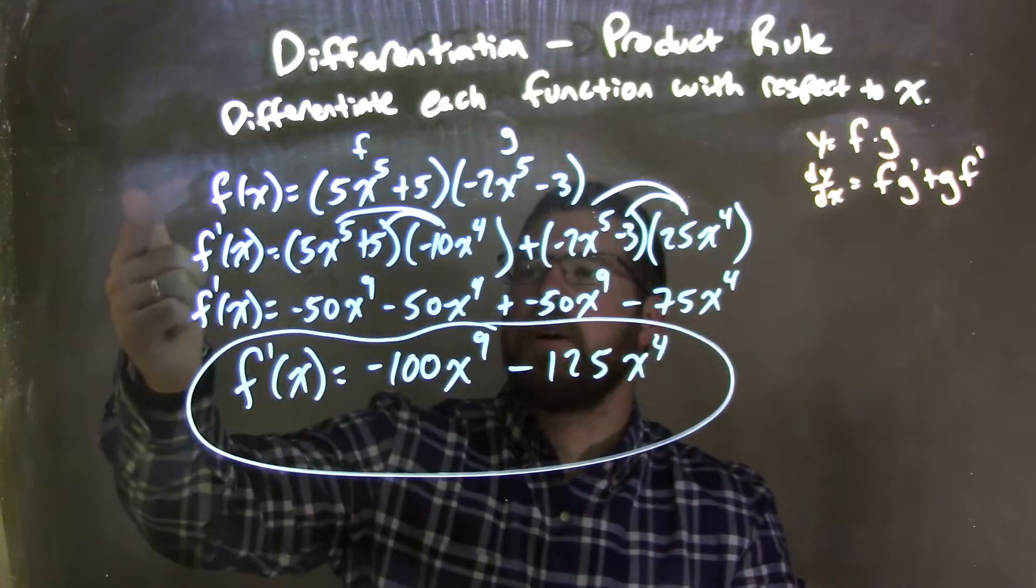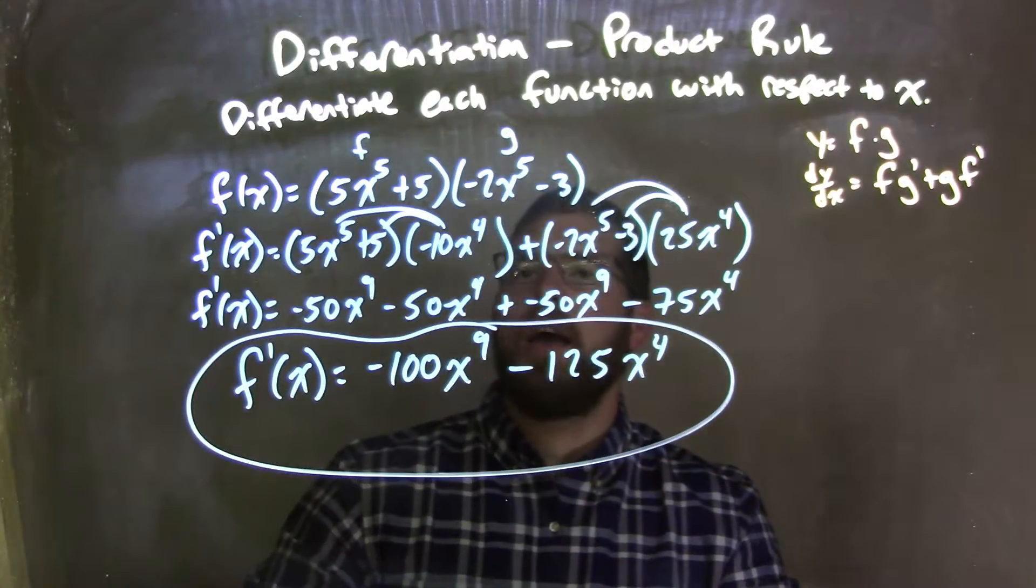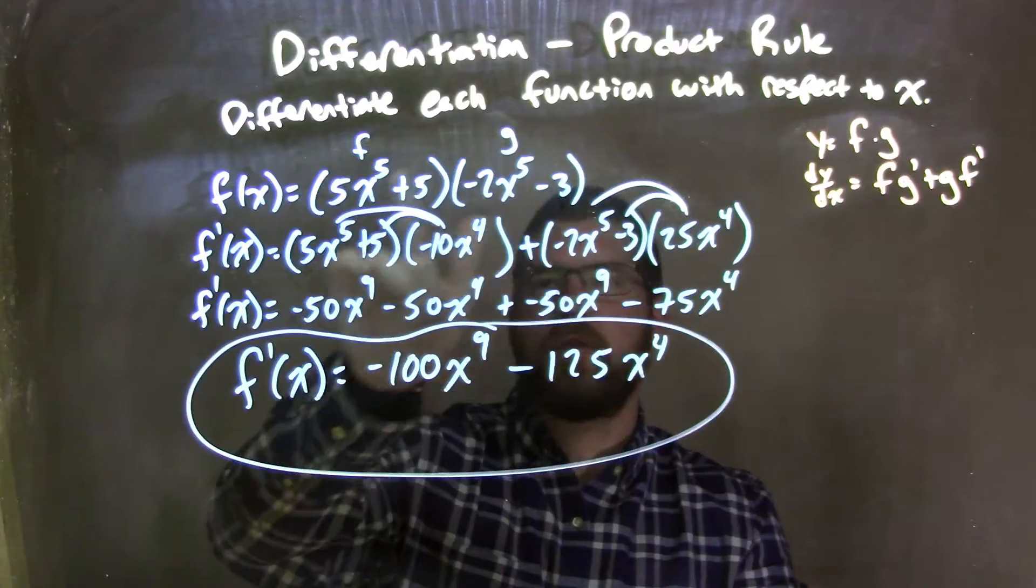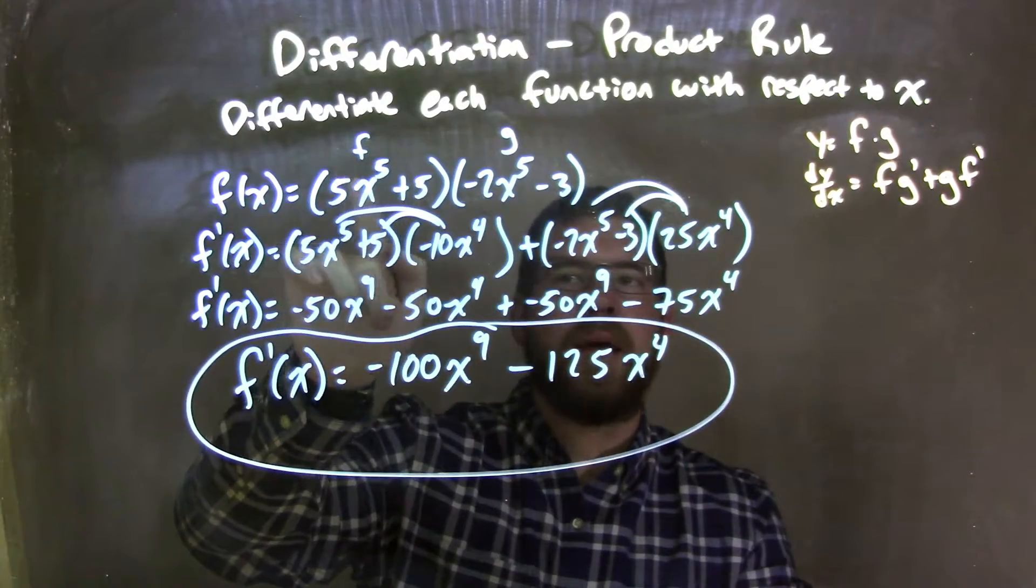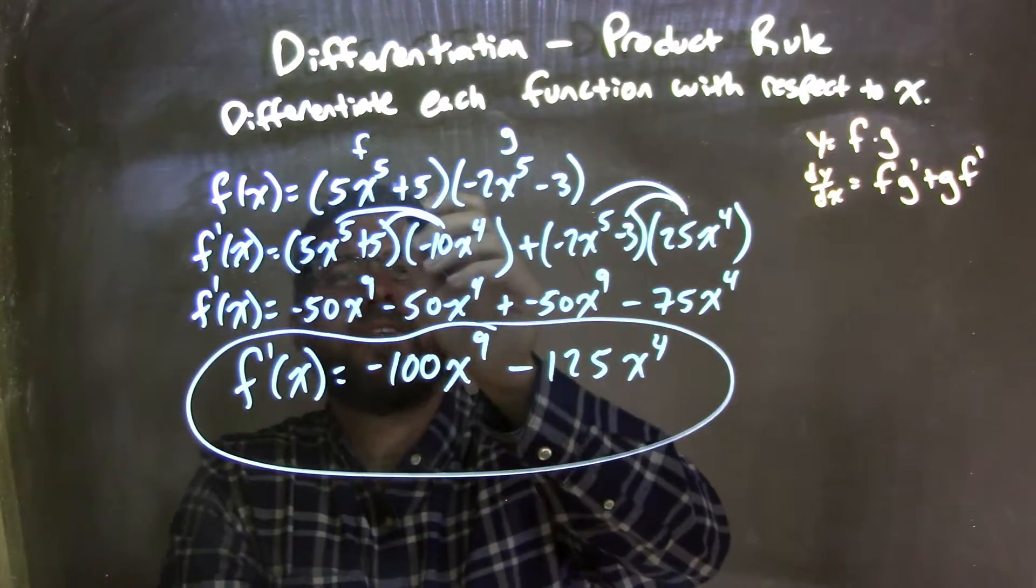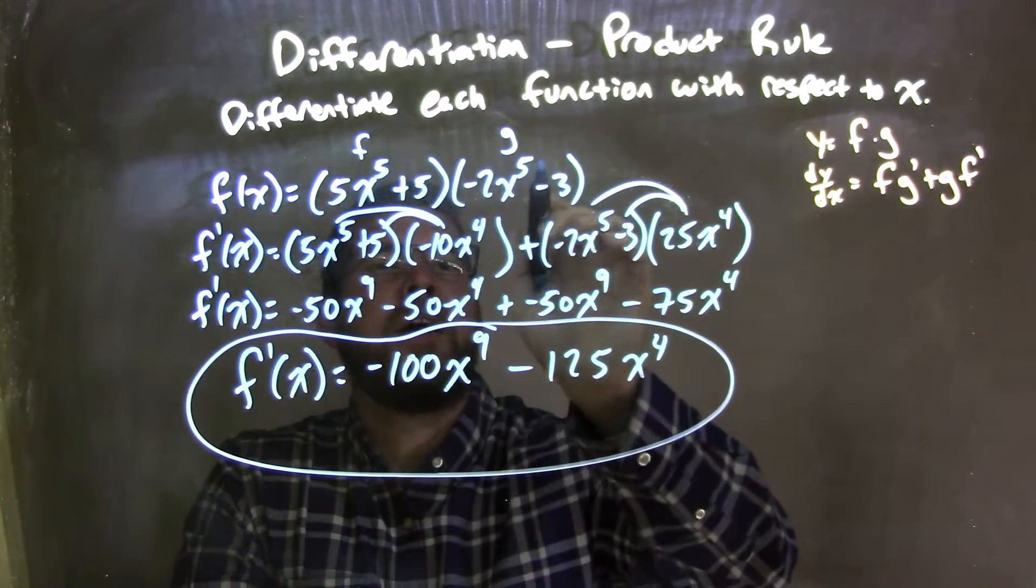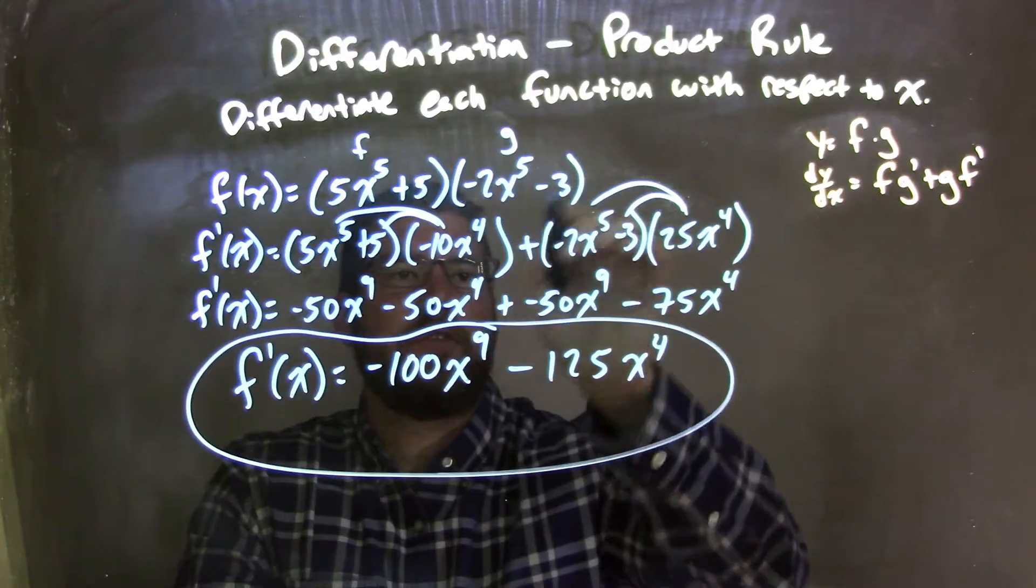So let's recap. We're given our function, f of x, and it's two functions being multiplied together. The first one, 5x to the fifth plus 5, we label as f. And g we label to be negative 2x to the fifth minus 3.